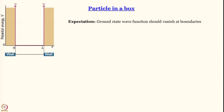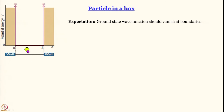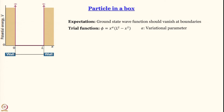Now let us move to the other system — particle in a box. Here we expect the ground state wave function to vanish at the boundaries (the boundary condition), and secondly we also expect it to be symmetric with respect to L/2 — symmetric with respect to the center. So two conditions: the ground state wave function should vanish at the boundaries, and it should be symmetric about the midpoint at x = L/2.